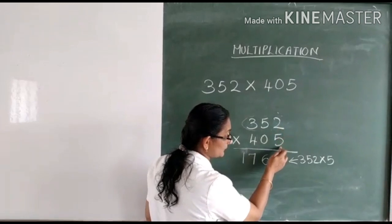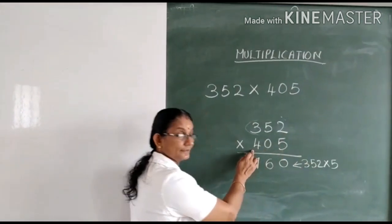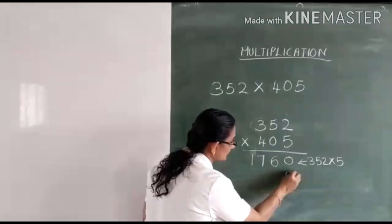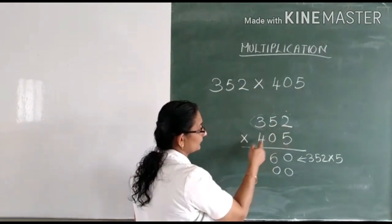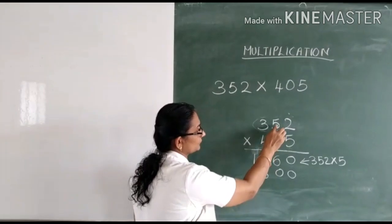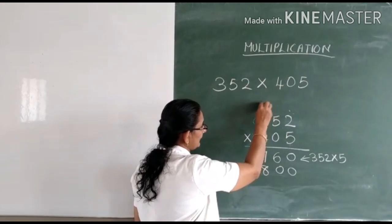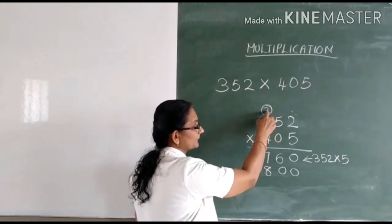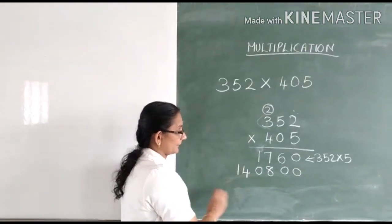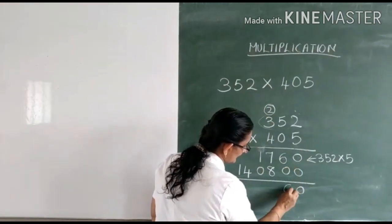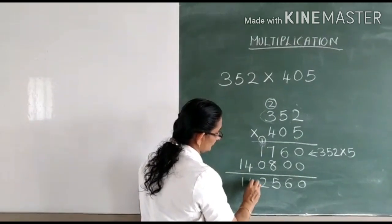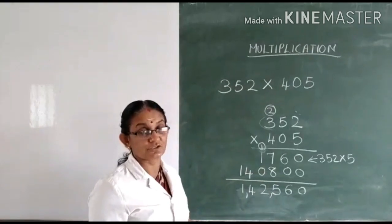After multiplying 352 with the first digit, you can straight away multiply 352 with the digit four. Because four is in the hundreds place, you have to put two zeros and then multiply 352 with four. Four into two is eight. Four into five is twenty — zero is written here and two is carried over. Four into three is twelve, and twelve plus two is fourteen. Now the last step: add both the products. Zero plus zero is zero, six plus zero is six, seven plus eight is fifteen — one is carried over, one plus one is two, and four. You can see that in both conditions you get the same answer.